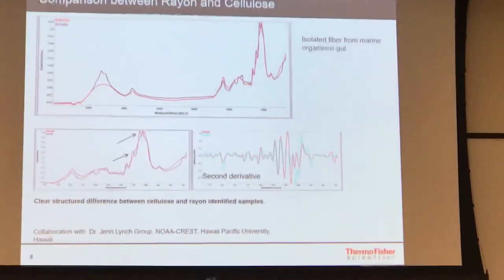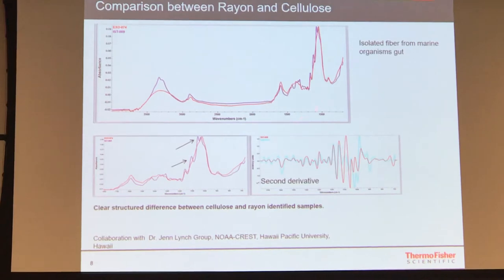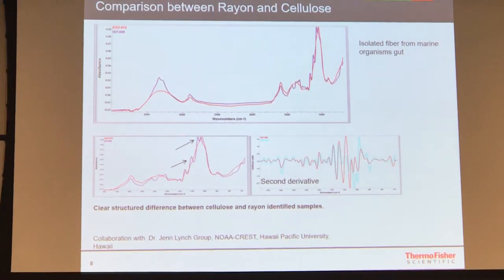This is a very well-differentiated chitin and cellulose. These are fibers isolated by Dr. Jandlin's group back at HPU, and these are isolated from marine organisms. But the peaks that you are really looking at to differentiate out here are really small.